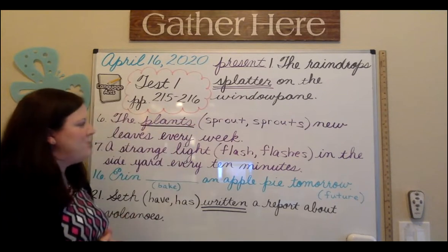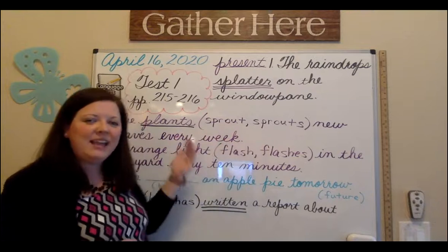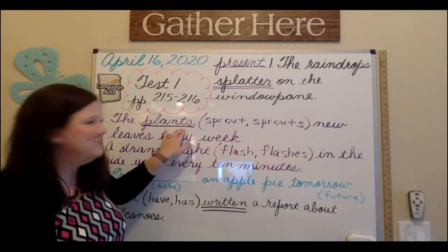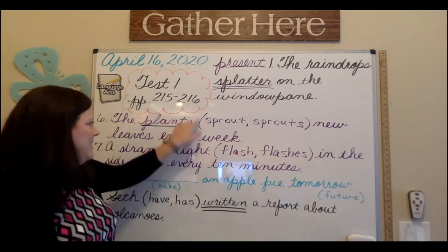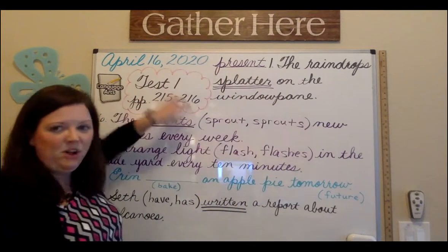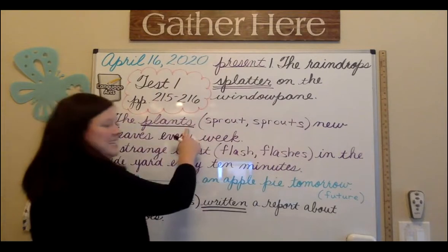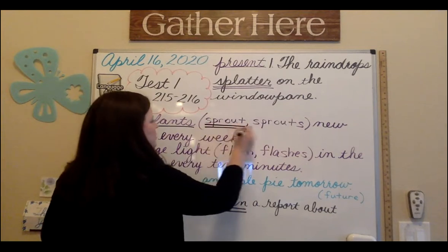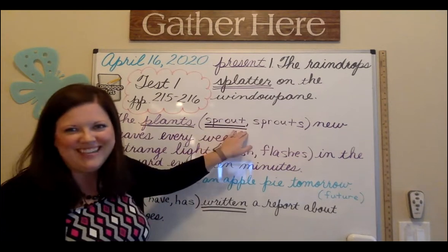Now we need to find the correct verb. One has an S, one does not. Let's go back and ask a couple of questions about our subject. Is our subject singular or is it plural? It's plural because it ends with an S. Remember, this is like what I said for volleyball — if the volleyball is the S, we're not going to have a volleyball over here too. Keep the volleyball on one side of the net. So since 'plants' ends with an S, we're going to choose the verb that does not end with an S. Underline 'sprout' two times. Plural verbs do not end in S.